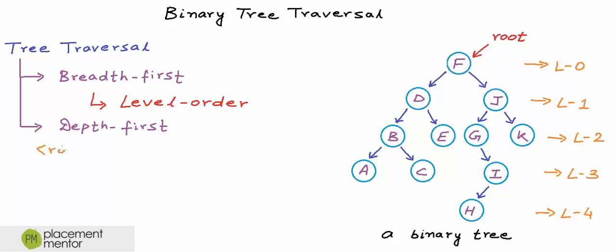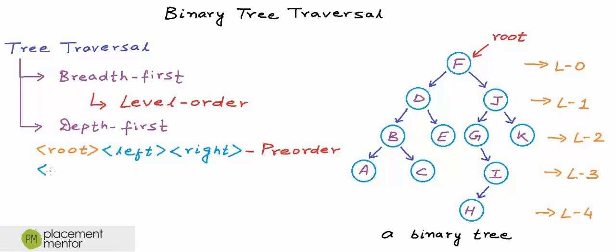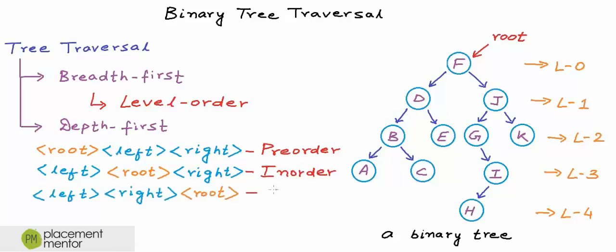Based on the relative order of left subtree, right subtree, and root, there are three popular depth first strategies. One way is to first visit the root node, then the left subtree, then the right subtree — this is called pre-order traversal. Another way is to first visit the left subtree, then the root, then the right subtree — this is called inorder traversal. And if root is visited after left and right subtrees, that is called post-order traversal. Conventionally, the left subtree is always visited before the right subtree, so only the position of root changes: before left and right is pre-order, in between is inorder, and after left and right is post-order.